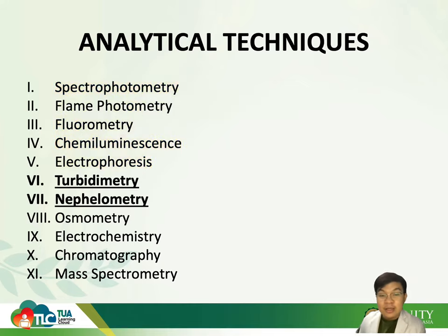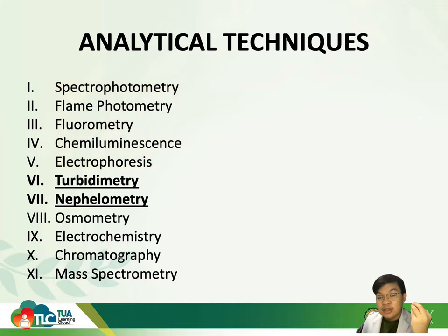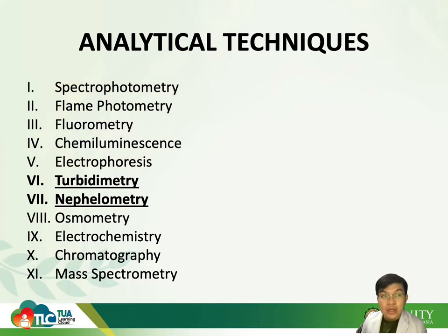We're going to talk about turbidimetry and nephelometry. Please remember that when it comes to turbidimetry and nephelometry, I hope you still recall when we talked about photometric spectroscopy. There is a type of photometric spectroscopy that only measures light, and then there's spectrophotometry. We have photometry and we also have spectrophotometry. In spectrophotometry, we dealt with light, spectrum, different wavelengths, and measuring a particular analyte.